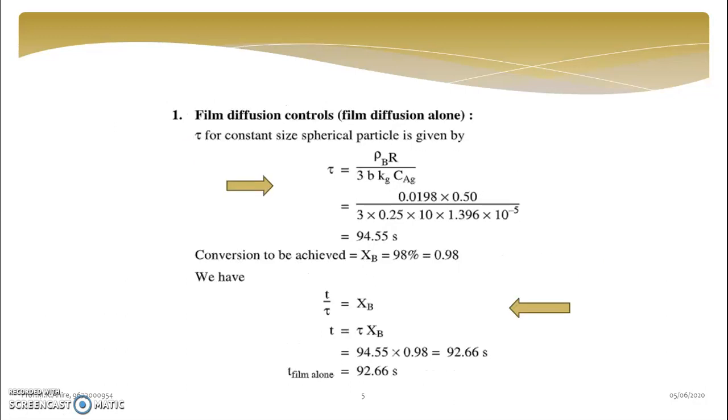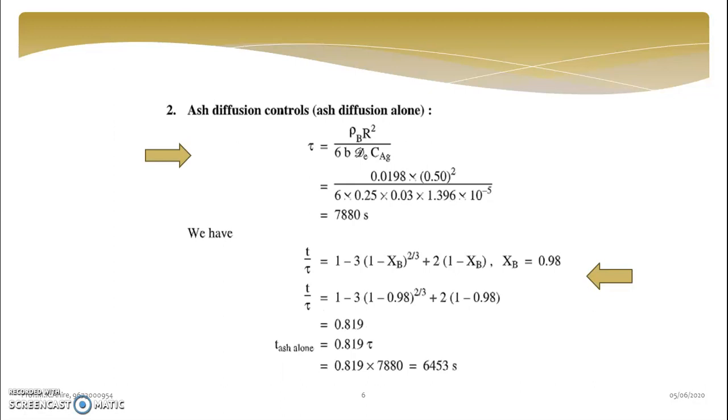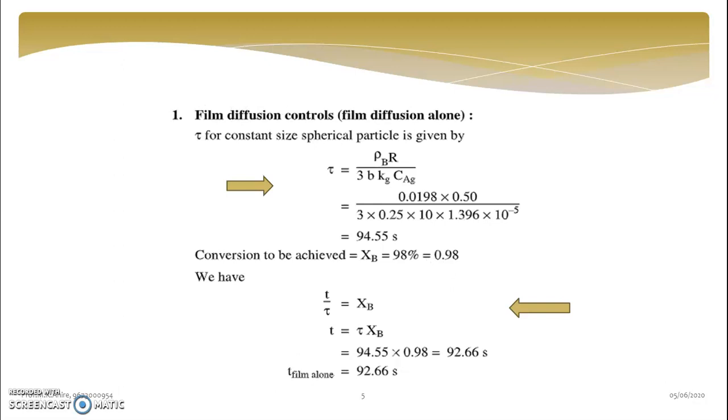If you just compare this value previous 94.55, it means as compared to 7880, this value is very little. Means you can neglect, even you can neglect. But here as data is given, so we are using. Also they are not mentioned that you have to ignore it.